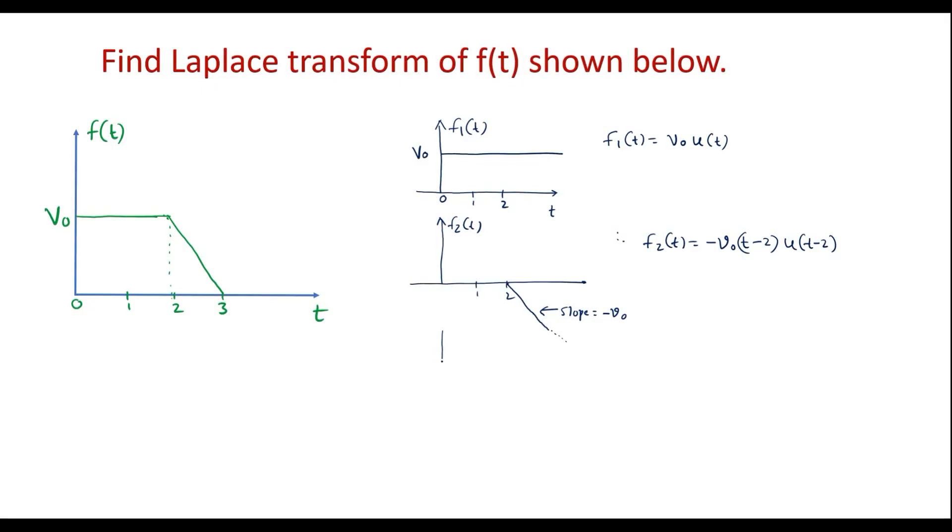So I will take the third signal, say this is f3 of t. Say this is 1, 2, 3. Now, at t equal to 3, I will add one positive ramp signal of slope v0.